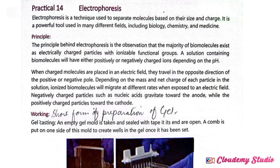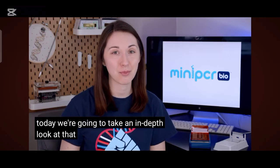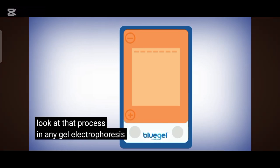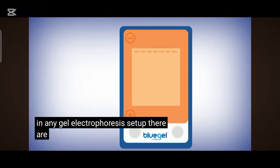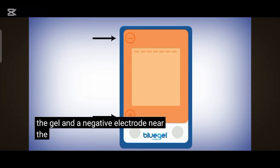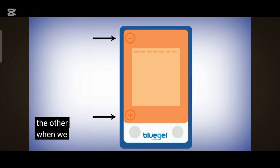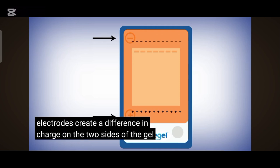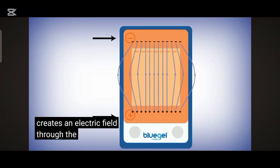We are going to take an in-depth look at that process. In any gel electrophoresis setup, there are two electrodes: a positive electrode near one side of the gel and a negative electrode near the other. When we turn the power supply on, the two electrodes create a difference in charge on the two sides of the gel, which creates an electric field through the gel.